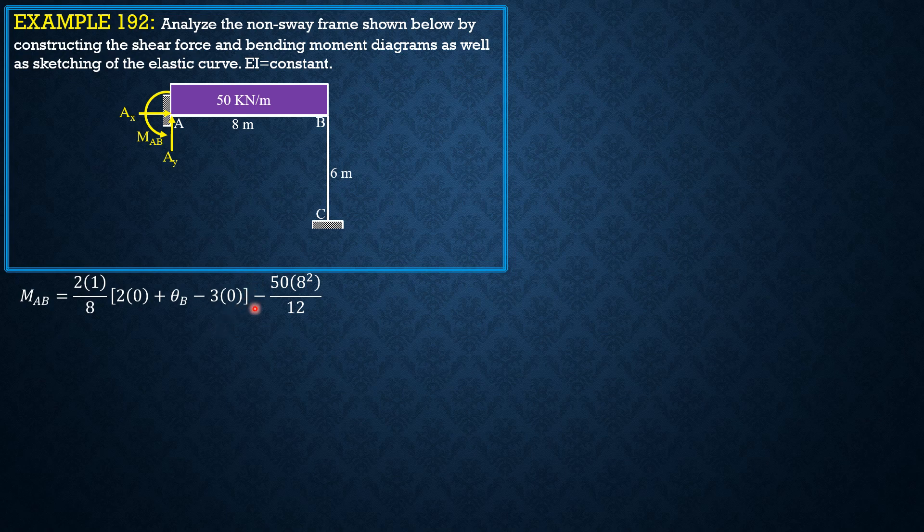Then minus the fixed end moment at A, which is negative because it is at the left of B. So w times 8 squared over 12. Simplifying, MAB equals 0.25θB minus 800 over 3. Call this Equation 1.